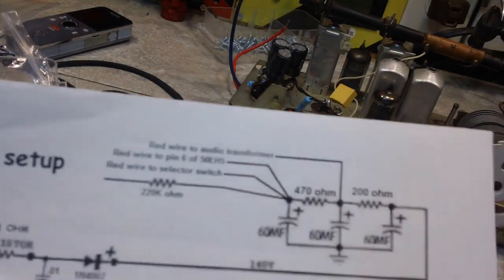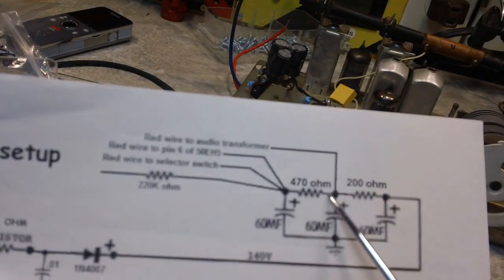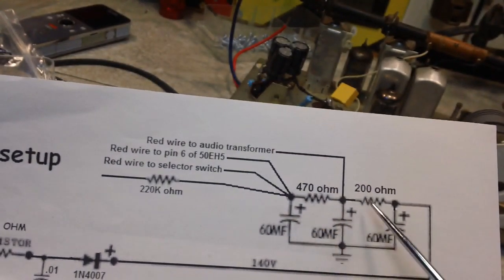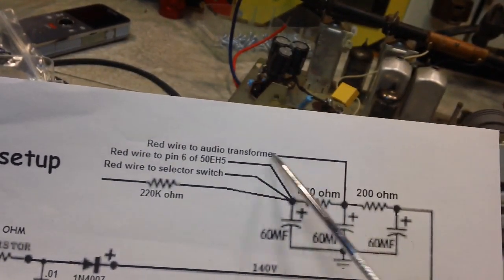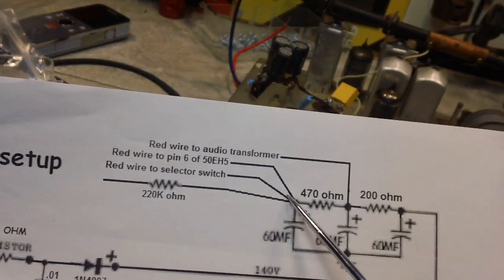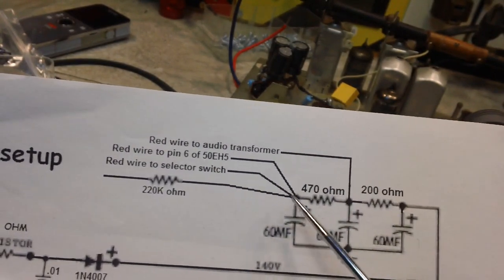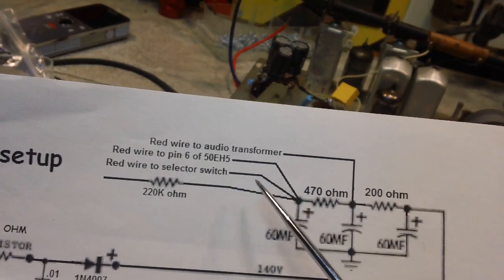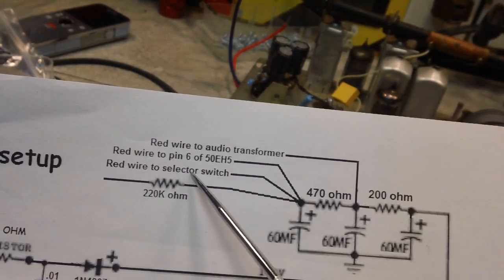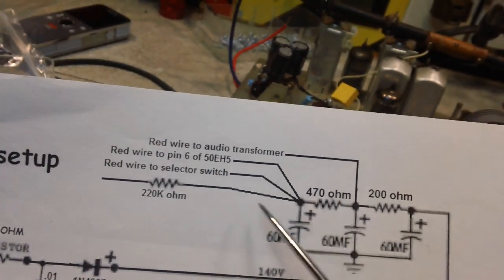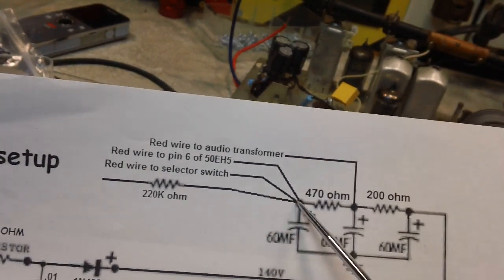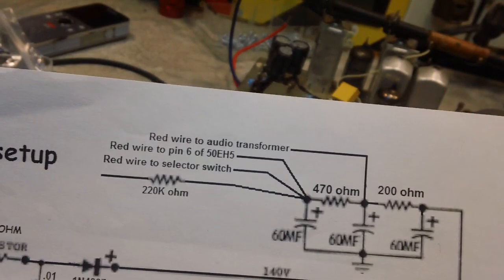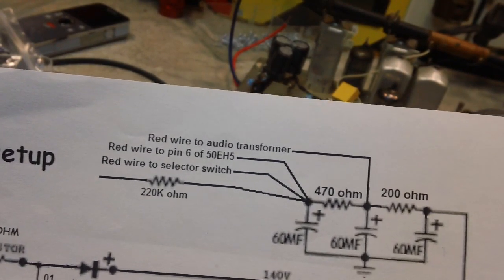All right, what we have up here now, we have all this done. 200 ohm, 68, or should say 68, 68, 68, all three of those are there. This wire is in here, red wire to the audio transformer. I have the 470, I have the 200 in, and the things I have left to do is connect red wire from pin 6 of the 50EH5 here, red wire from the selector switch connects here, and the 220 ohm resistor connects here. Now I think what I'm going to try to do is get those together underneath the chassis and run one wire up there, and that would probably be a lot easier way to do it I do believe.